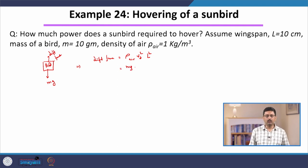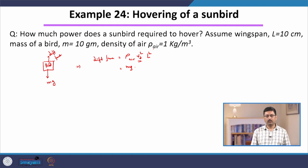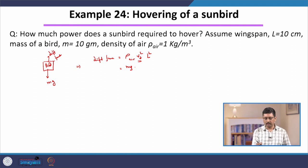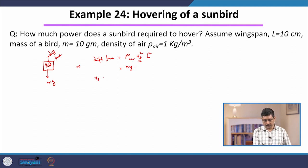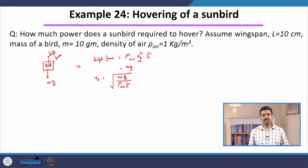In this equation, L is given (the wingspan), ρ_air is given, m is given — what is unknown is vz, the flow speed the bird generates by flapping. The flow speed must satisfy this equation, which gives us an expression for vz due to the flapping of the wing.